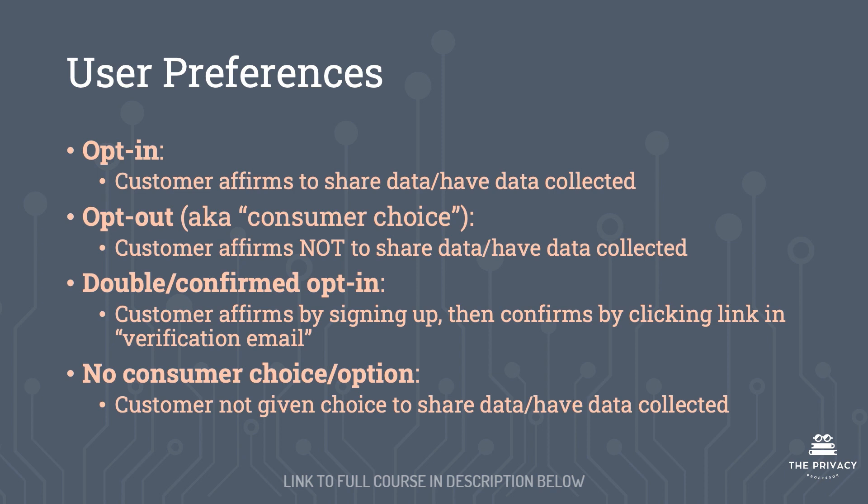The double or confirmed opt-in is when a customer affirms by signing up for a service, the service then sends them a verification email, and the consumer clicks a link that verifies their confirmation. This is the double confirm because the customer is affirming twice. There is also the no consumer choice or no consumer option — this is when the customer is not given a choice whether to share their data or have data collected.